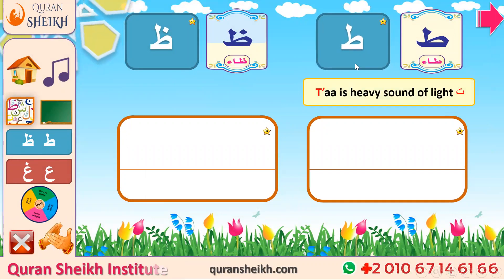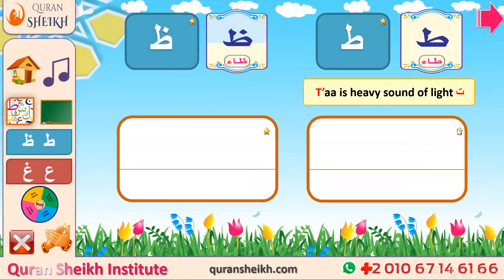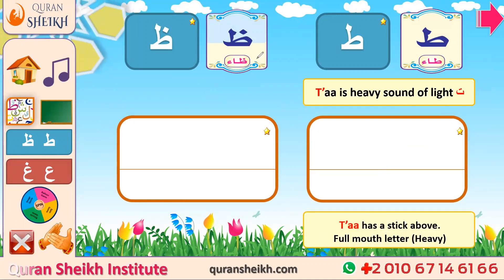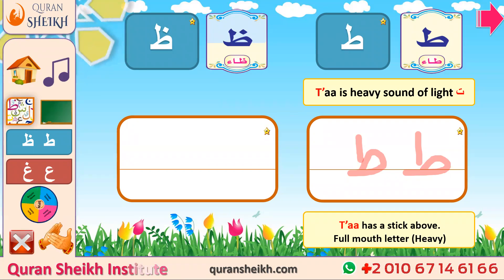Repeat after me three times: Ta, Ta, Ta. Do you know the Ta letter already? Ta is a light sound, but Ta (ط) is a heavy sound — Ta is the heavy sound of the Ta letter. How can we write down the Ta letter? Let me show you. Ta letter is like this: one stick above. How do you pronounce and read the name of this letter? Ta — Ta with a full mouth — because the Ta letter is a heavy sound of Ta. Repeat after me: Ta, Ta, Ta. Ahsan!